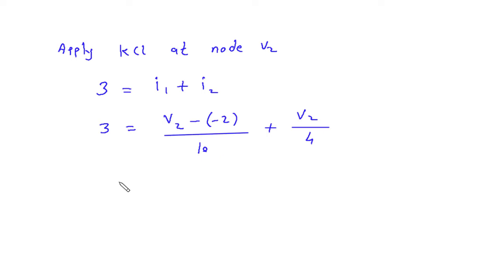So this will be 3 is equal to V2 by 10 plus 2 by 10 plus V2 by 4.